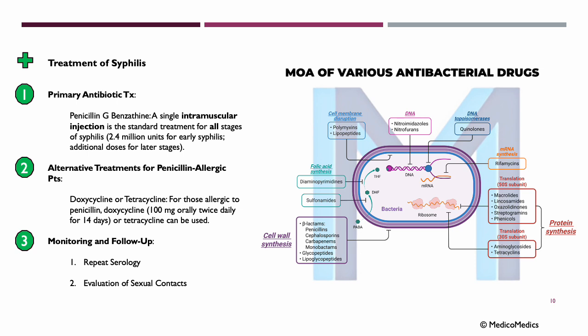We treat syphilis primarily using penicillin G benzathine, given as a single intramuscular injection — the standard treatment for all stages of syphilis. We give 2.4 million units for early syphilis, with additional doses for later stages. Penicillin inhibits bacterial cell wall synthesis by binding to penicillin-binding proteins, leading to cell lysis. This makes it very effective against Treponema pallidum — the penicillin interferes with bacterial cell wall synthesis, causing the bacteria to rupture and die.